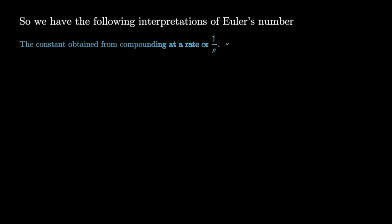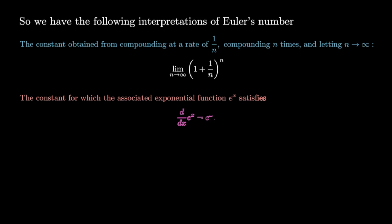We have the following interpretations of Euler's number. Euler's number is the constant obtained by compounding at a rate of 1 over n, compounding n times, and then letting n go to infinity. Via calculus, we can express it as the constant for which the associated exponential function satisfies d/dx of e to the x is exactly itself. In terms of integrals, it's the solution t of the equation: the integral from 1 to t of 1 over x dx equals 1.